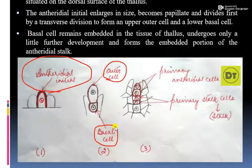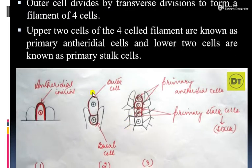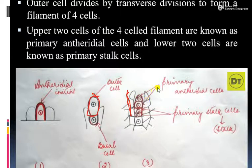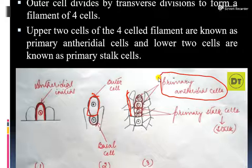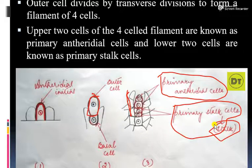The outer cell undergoes further transverse division, forming a filament of four cells. The first cell is called the primary antheridial cell, and the second is called the primary stalk cell. The primary stalk cell will divide and form the stalk of the antheridium.